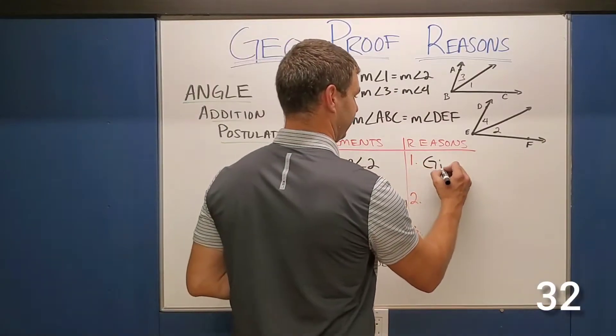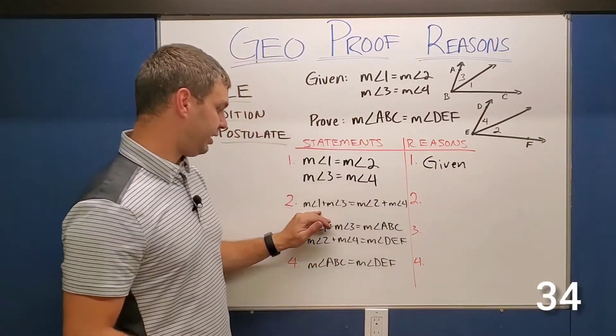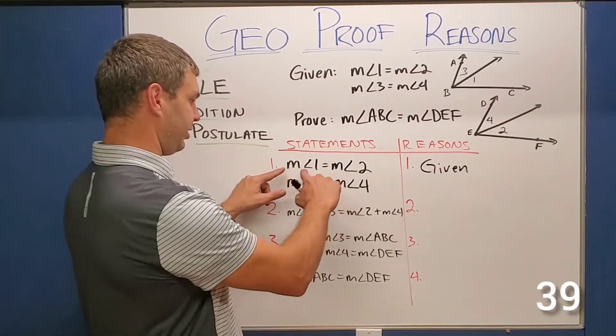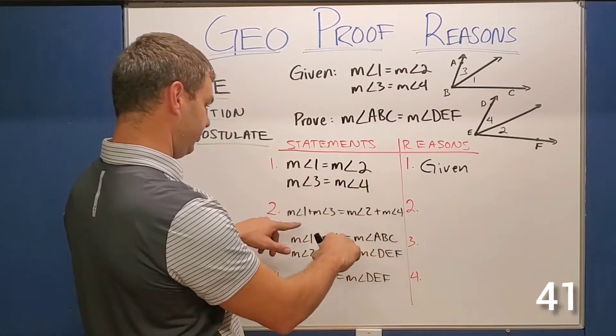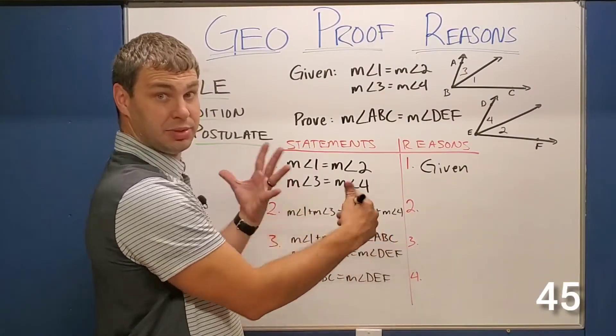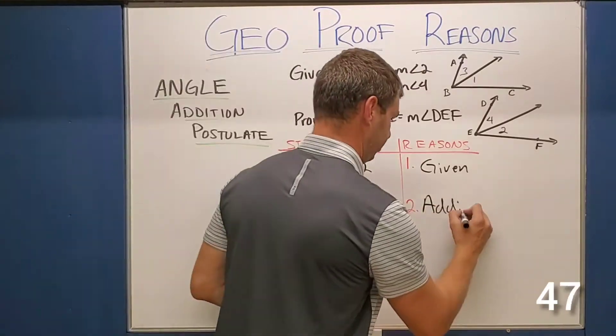So of course in that first line, this is going to be our given. In the second line, angle one plus angle three equals angle two plus angle four. If you look what they did here, they took like this first one, one and two. One and two and they what they did since three is equal to four, they just added the same thing on to both sides. So this is actually addition.